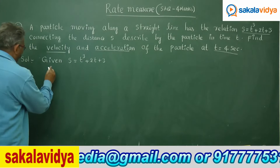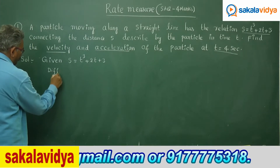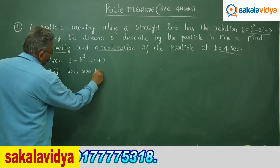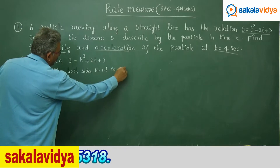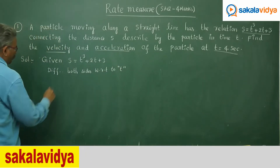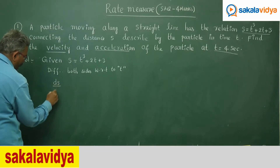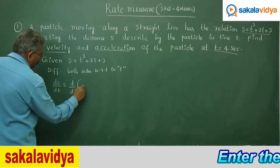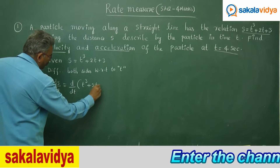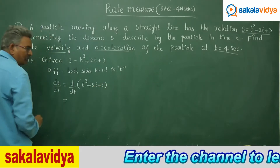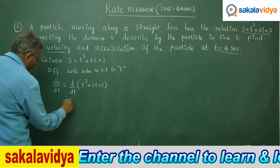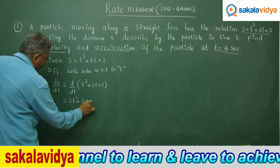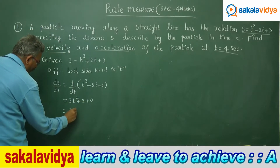Differentiating both sides with respect to t, where t is the variable: ds by dt equals d by dt of t cubed plus 2t plus 3. The differentiation of t cubed is 3t squared, the differentiation of t is 1, so we get 2 times 1, and the constant 3 gives 0. Therefore, ds by dt equals 3t squared plus 2.